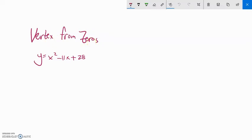I could solve this, factor it, run it through quadratic formula, whatever. But I could know that its zeros are at 7 and 4.